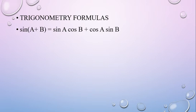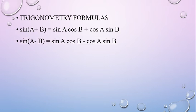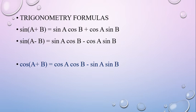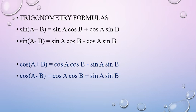Sin(a + b) equals sin a cos b plus cos a sin b. Sin(a − b) equals sin a cos b minus cos a sin b. Cos(a + b) equals cos a cos b minus sin a sin b. Cos(a − b) equals cos a cos b plus sin a sin b. These are important trigonometric formulas.